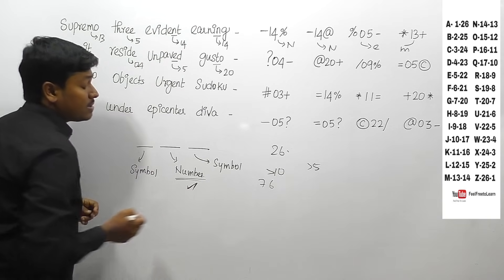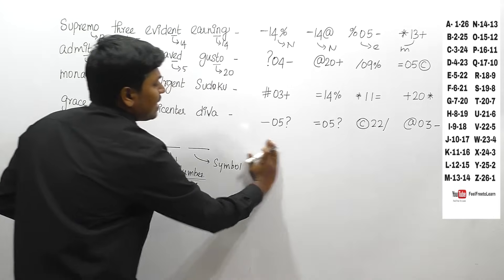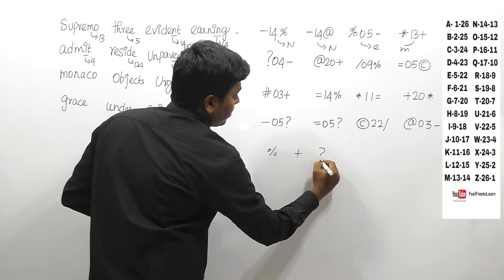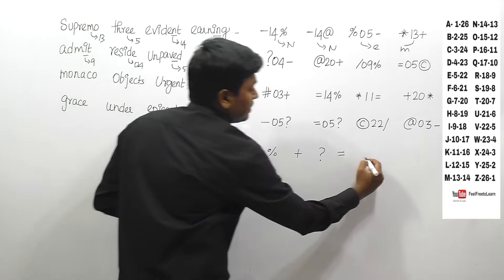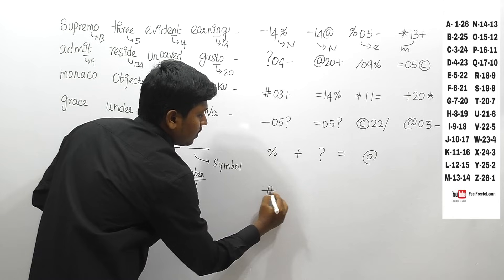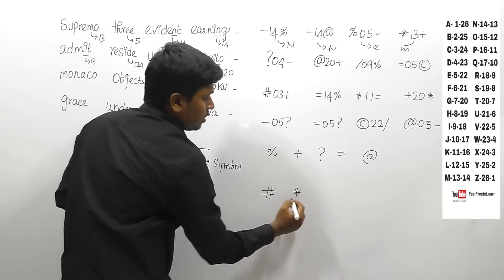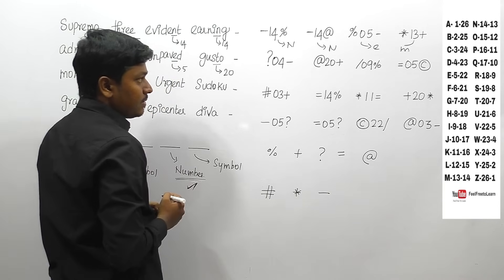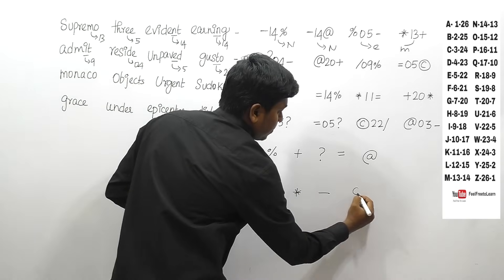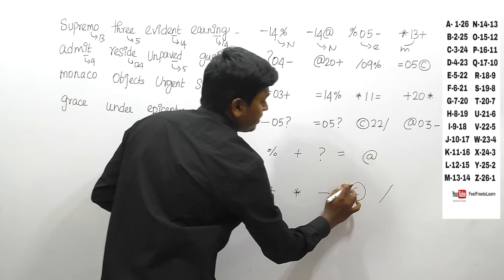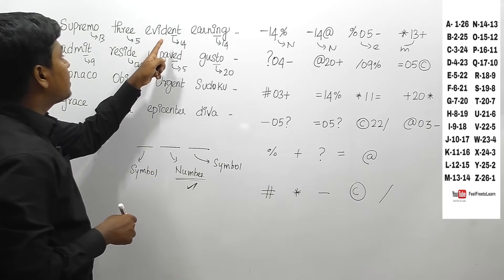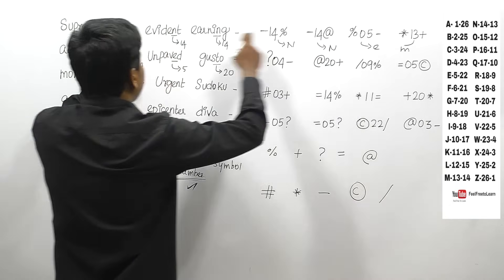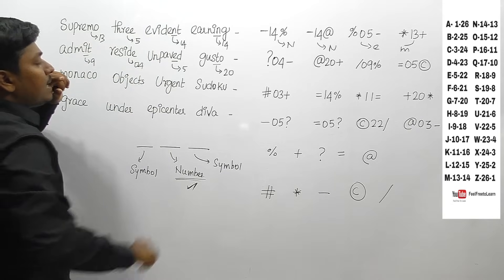We have found how the numbers are coded. Now we need to concentrate on the symbols. The symbols being used are: percentage, plus, question mark, equal to, at, 100, star, minus, copyright symbol, and slash. We know E should be coded as 5. In one word, percentage is used initially and minus at the last, but in another case minus is at the beginning.